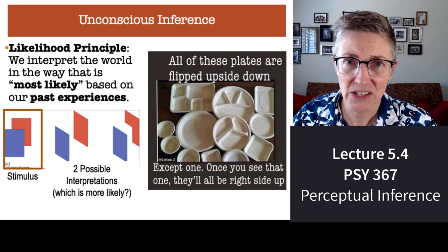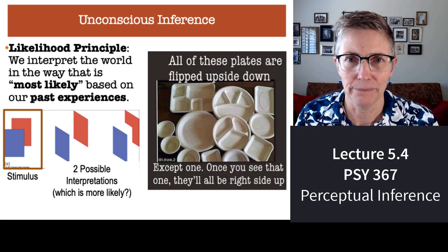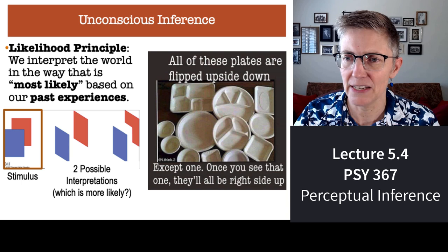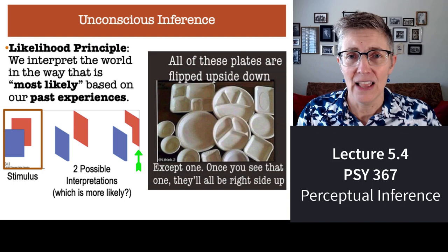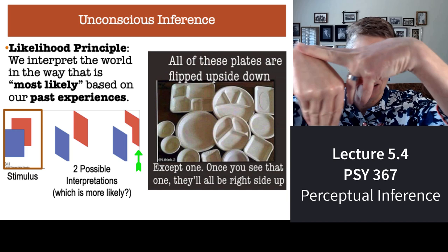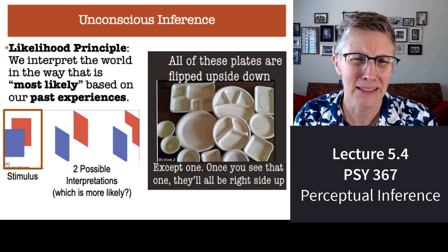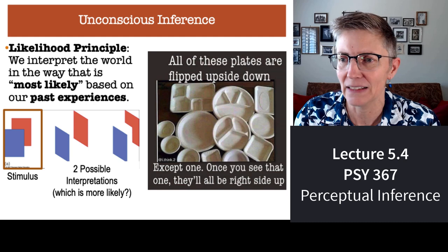We pick interpretations of stimuli that represent the most likely interpretation. You can see that in the drawings with the blue and red square. What's more likely — that we see two rectangles, one partially occluding the other, or that there's just one blue rectangle and a partial figure that just so happens to connect perfectly with the edges of the square? That seems less likely. So what we perceive is one rectangle in front of the other, because it's more probable.